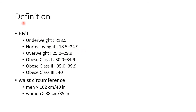Let us see about the definition of obesity. WHO classifies obesity based on body mass index. For the world population, when BMI is less than 18.5 it is underweight. Normal weight is when the BMI is between 18.5 to 24.9. Overweight is when BMI is between 25 to 29.9. Obesity class 1 is when BMI is between 30 to 34.9. When it is between 35 to 39.9 it is obesity class 2, and when it is greater than or equal to 40 it is obesity class 3.